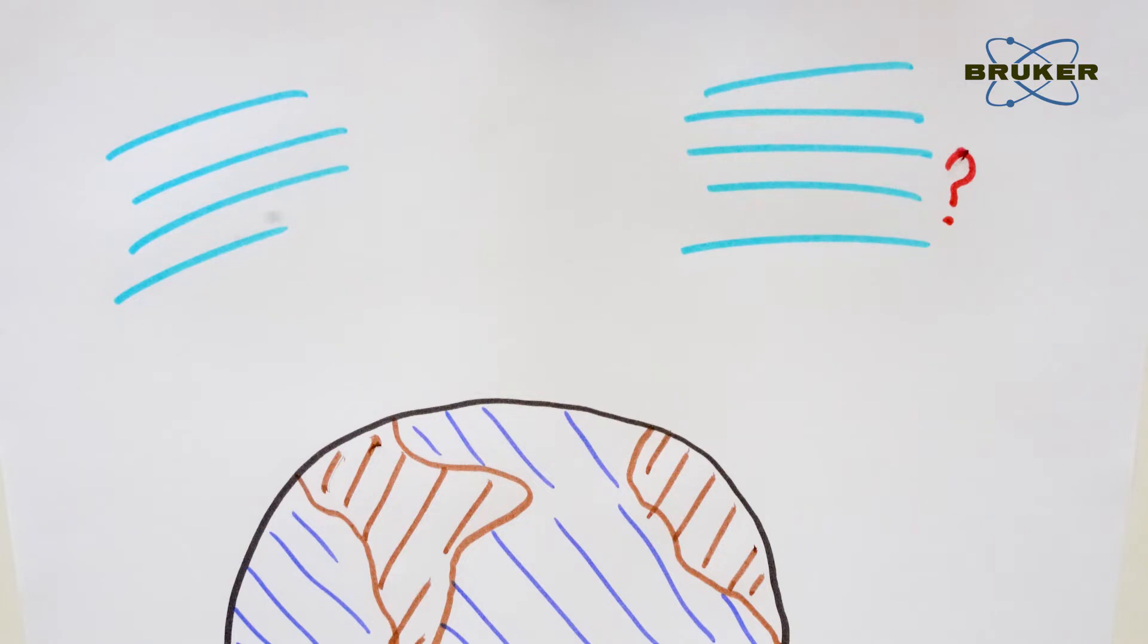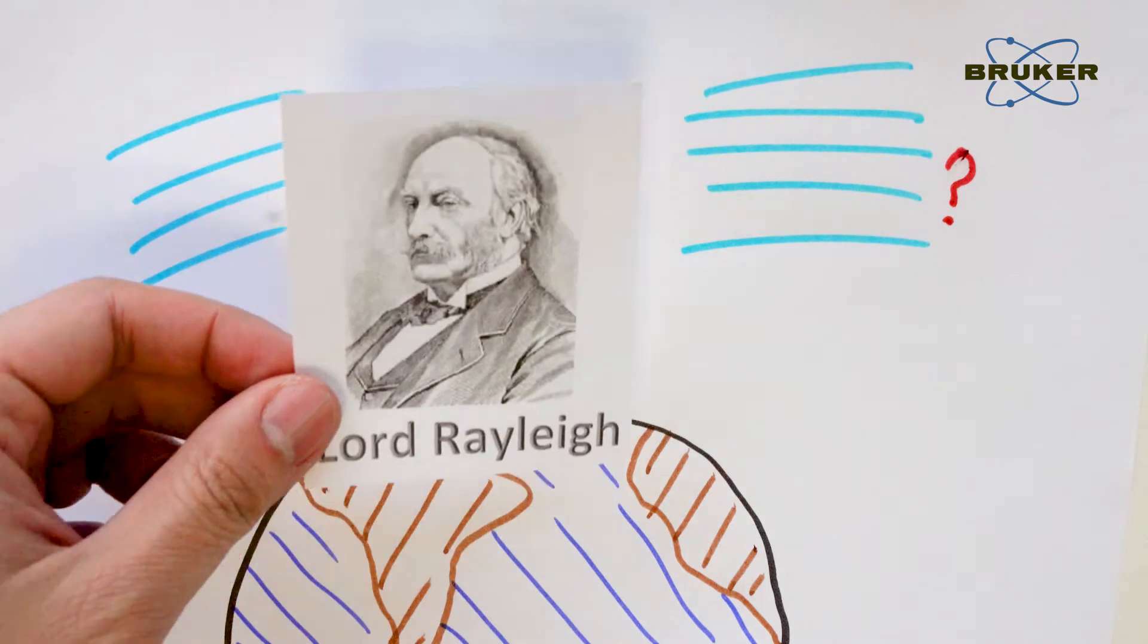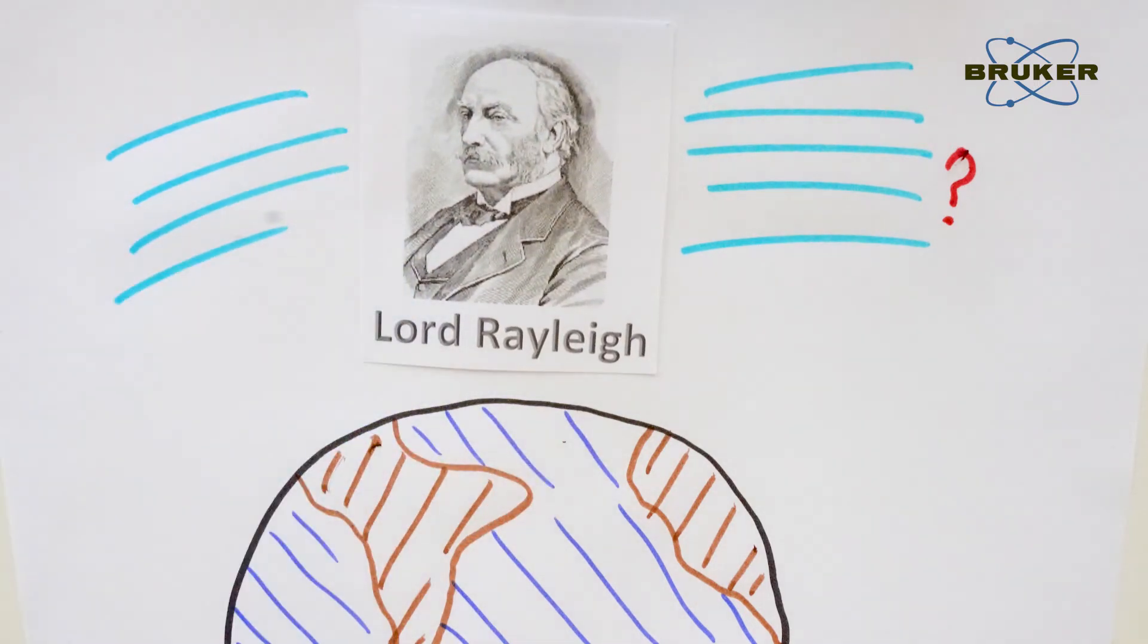In fact, physicists never had a correct answer until the end of 19th century, when Lord Rayleigh finally figured out how light scatters.